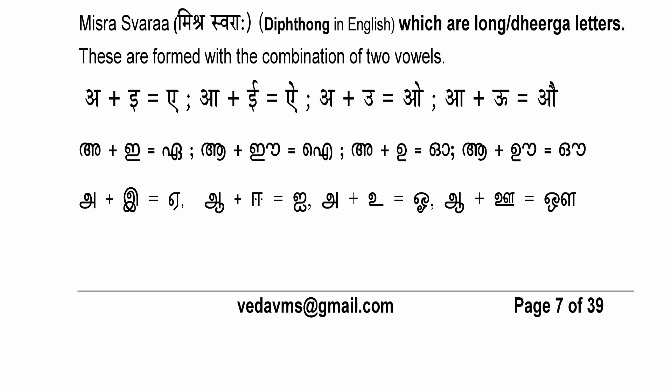The next letter is 'o'. This is also a misra swara — a combination of 'a' and 'u'. When you say 'a' and 'u' together, the 'o' effect comes. 'o' is a long letter and must be said for twice the time scale of a short letter. In Sanskrit, there is no short 'o'.